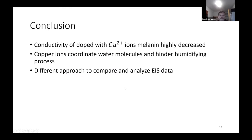Let me summarize the key points. We discussed a different approach to compare and analyze impedance data. We found that chelation by copper ions in melanin highly decreased conductivity compared to the pure sample. We realize that copper ions occupy binding groups in melanin's matrix, which hinders the water diffusion process.